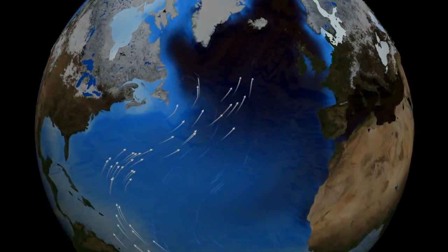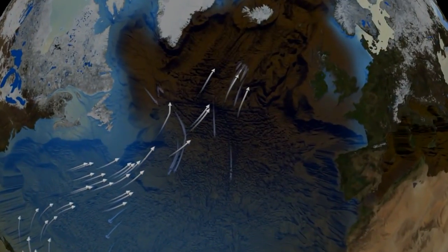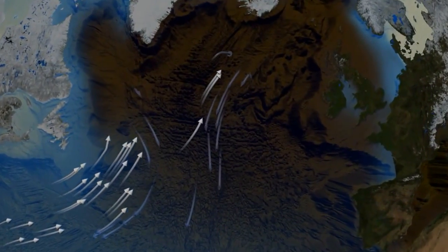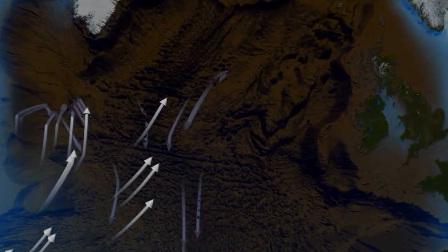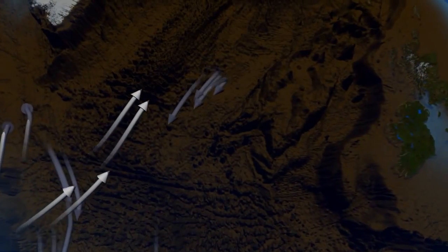Thermohaline circulation appears to be driven by surface waters that contain unusually large amounts of salt. These ocean currents are the reason for the highly productive ecosystems that are present all around the world.